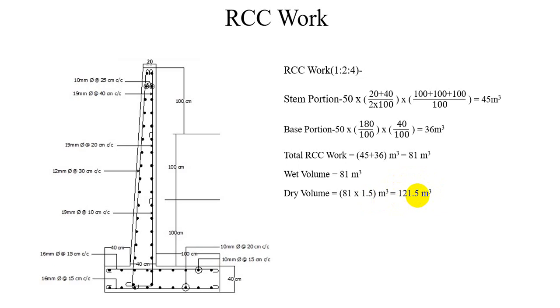Now for the cement calculation, the rule is total dry volume multiplied by the cement ratio. The total casting ratio is 1 plus 2 plus 4, which equals 7. This gives us the cement quantity in bags.